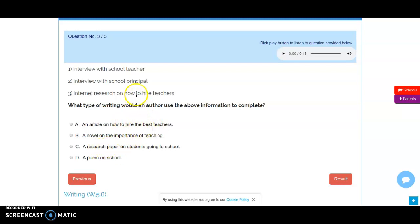we ask ourselves what exactly is relevant to the research that was done. An A is the best choice, an article on how to hire the best teachers.